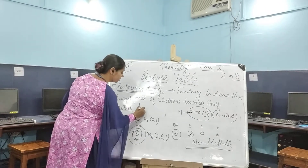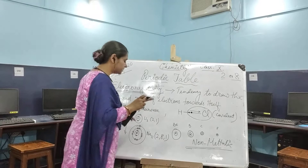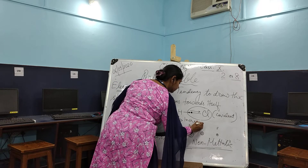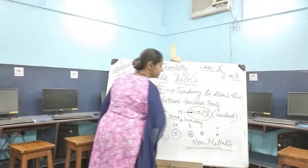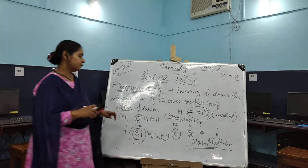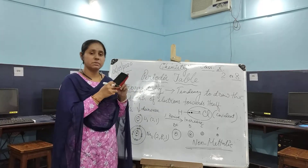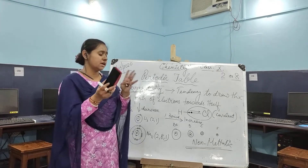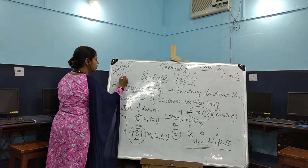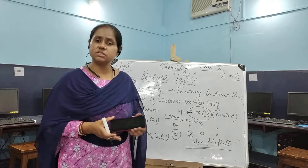Electronegativity value will decrease down the group and increase across a period. It will decrease down the group and increase across a period. Electronegativity is measured on the Pauling scale, which helps measure the electronegativities of different elements.